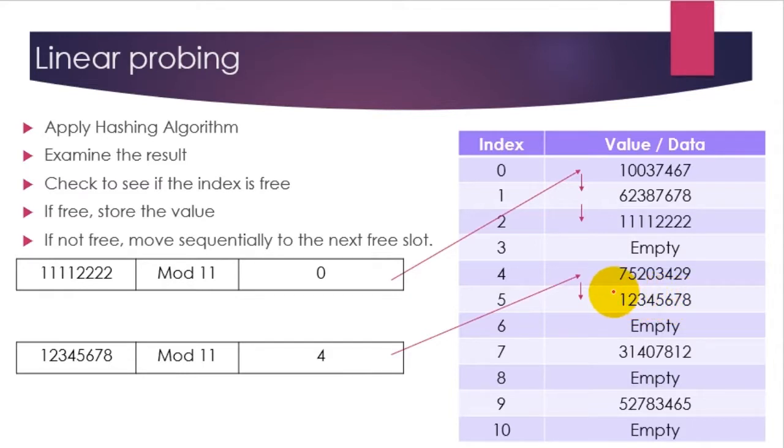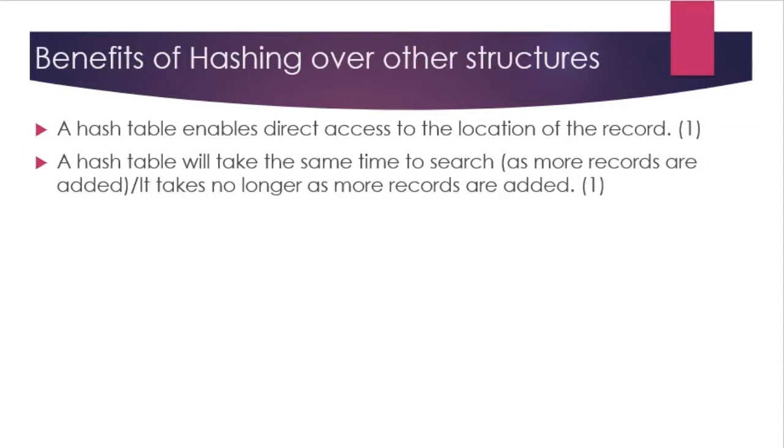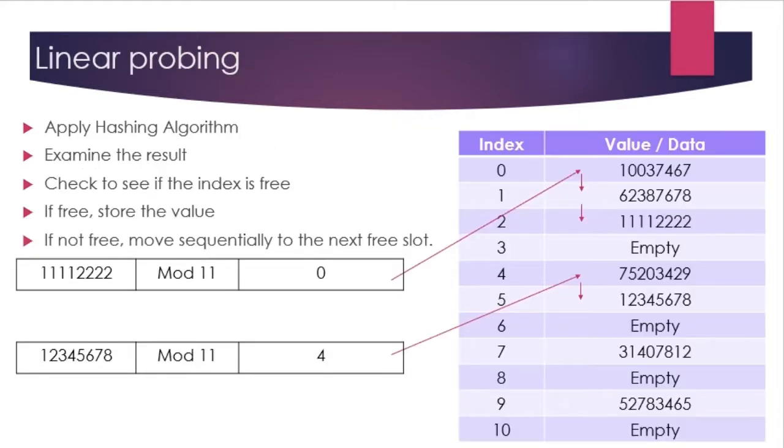That's all it is when it comes to handling collisions—dead easy. So what are the benefits of hashing over other structures? Well, a hash table enables direct access, and what that means is if you need to find a value, you can normally put it through the modulo 11 system, find the index, and then go straight to it. Imagine an array that has a million slots—well, you don't want to probe each one, one at a time, until you find a record. It's far easier to hash the record, find the hash value, and then go straight to the memory location where you think it's stored.